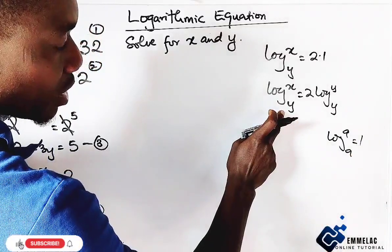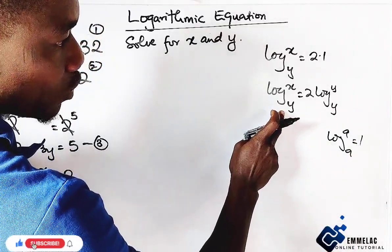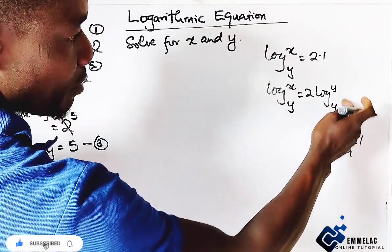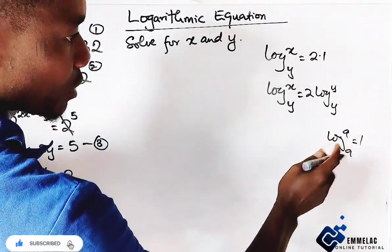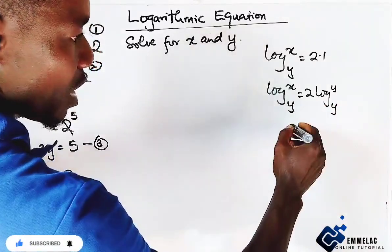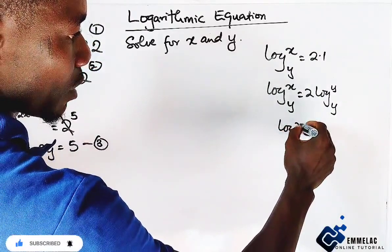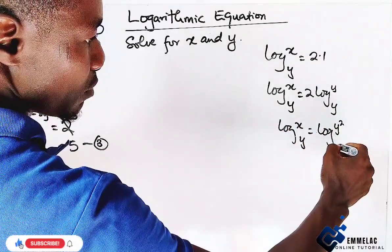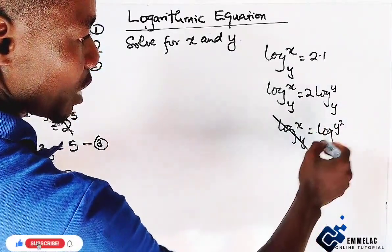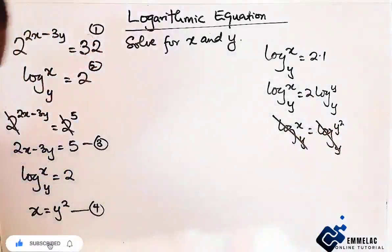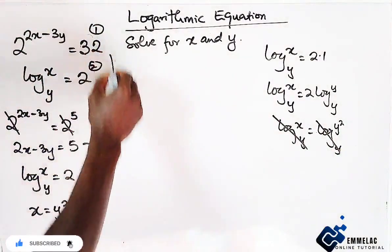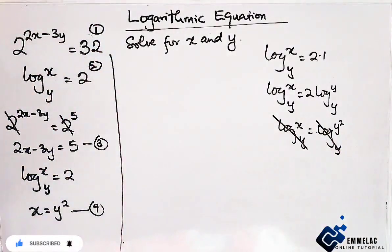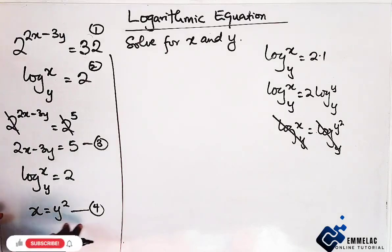Since we're having log base y here, we can make this log y base y. And as such, we have log x base y equals log y raised to the power of 2 base y. So we can just eliminate and we're left with x. From this we can now solve, since x equals to y raised to the power of 2, we can plug in 4 into equation 3.